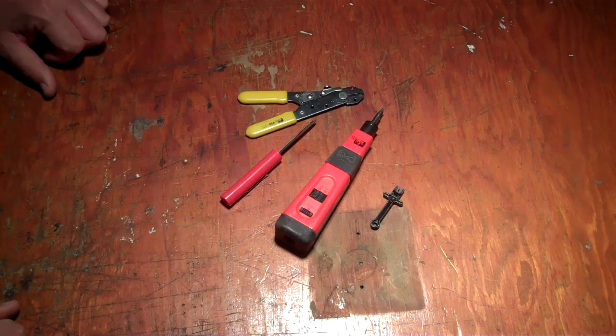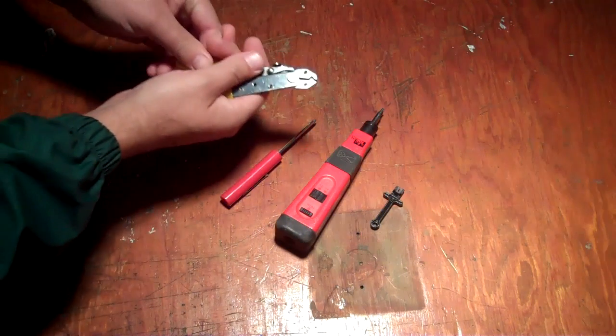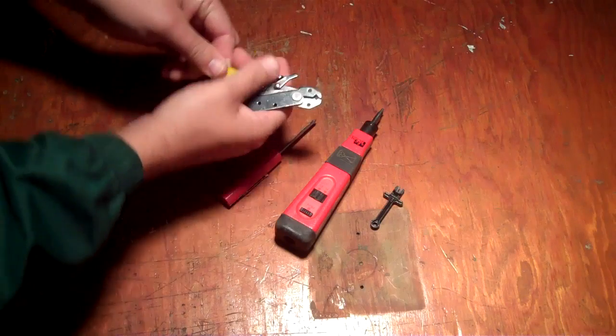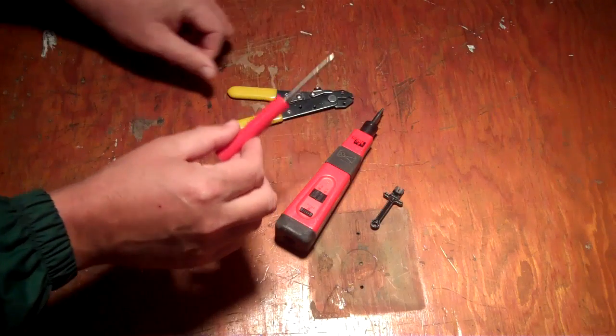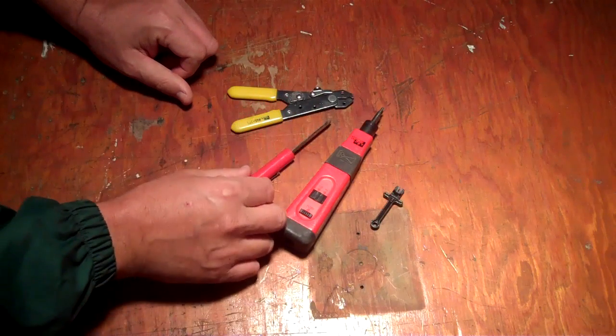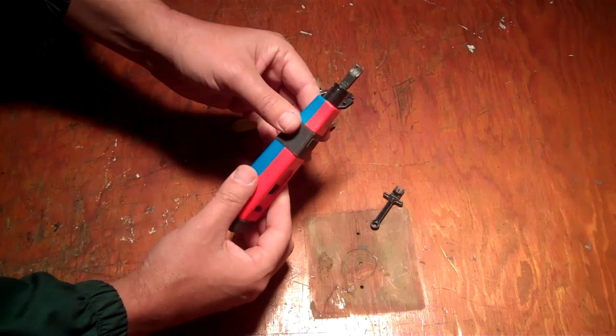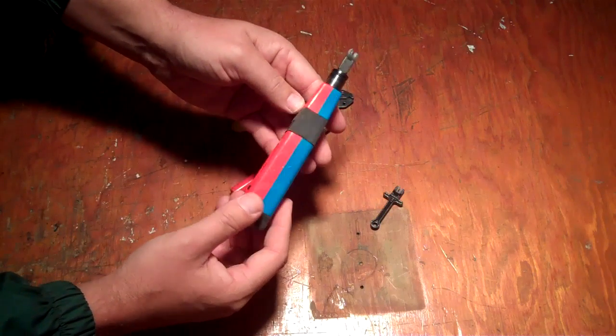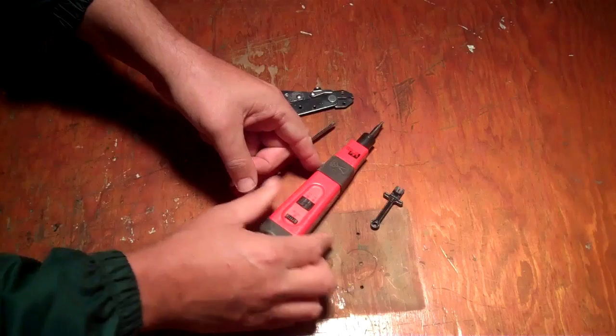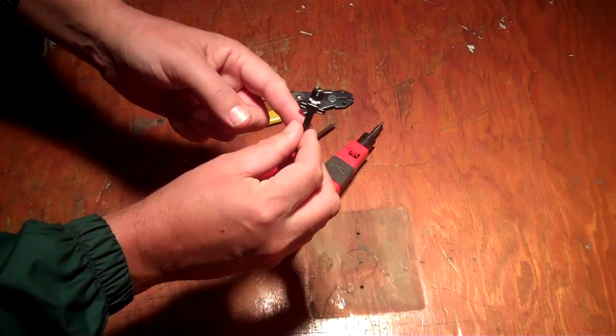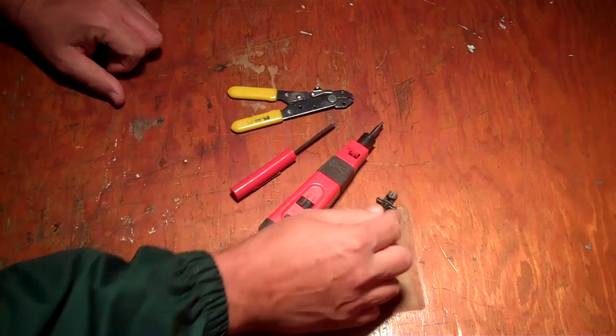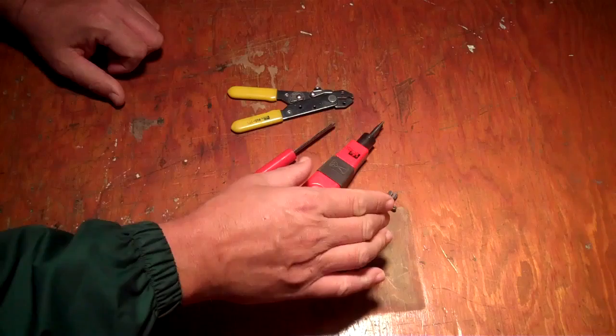Here are the tools you're going to need to complete this task. First, we have a small wire stripper. I have a small Phillips head screwdriver. Now I have a professional punch-down tool. And then I have a do-it-yourselfer punch-down tool. You only need one or the other. You do not need both.